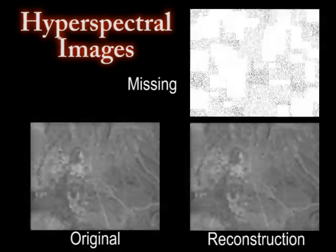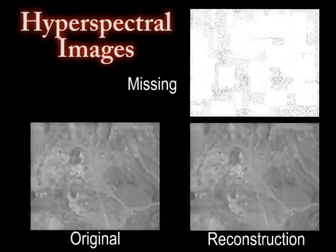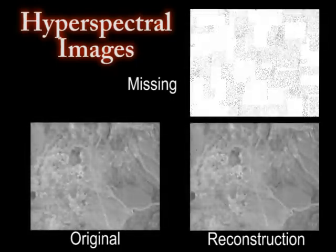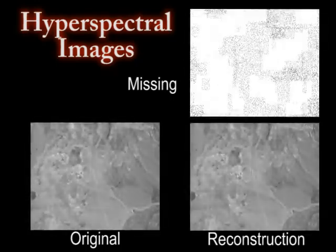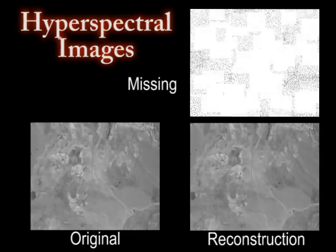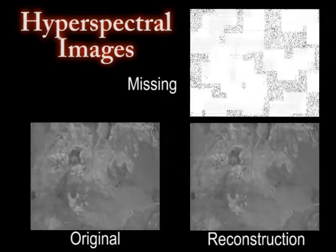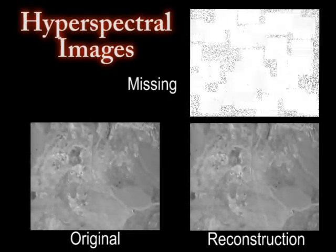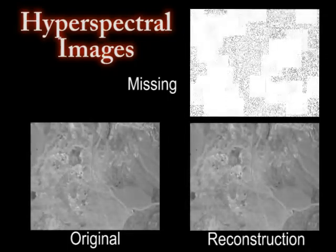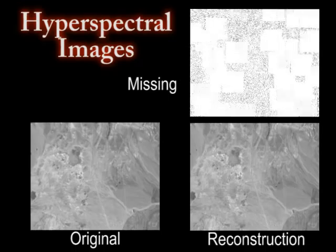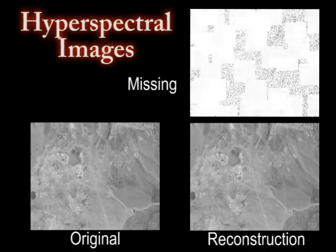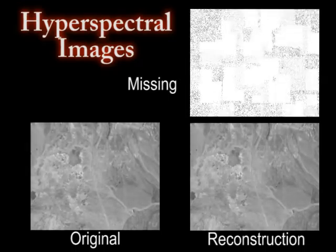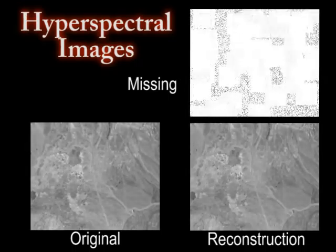Here we use the LRTC algorithm on a hyperspectral image. We randomly select single elements as well as larger blocks of data to remove over 90% of the data in total.